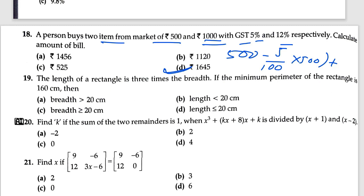Question 20: a rectangle has length three times its breadth. If breadth is x, then length is 3x. Find the correct option — it is the breadth. The condition is that it should be equal to 20 or not more than 20.